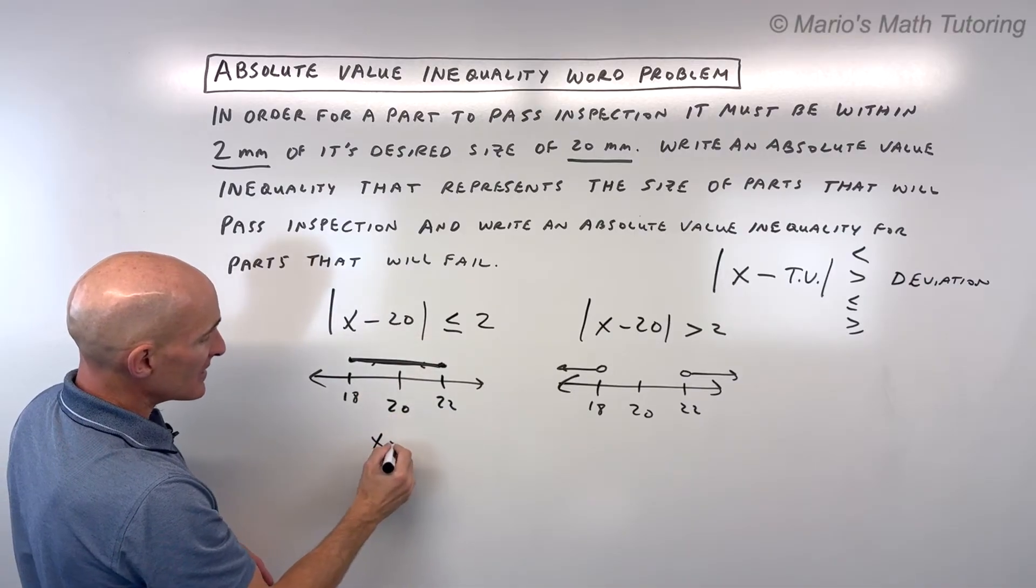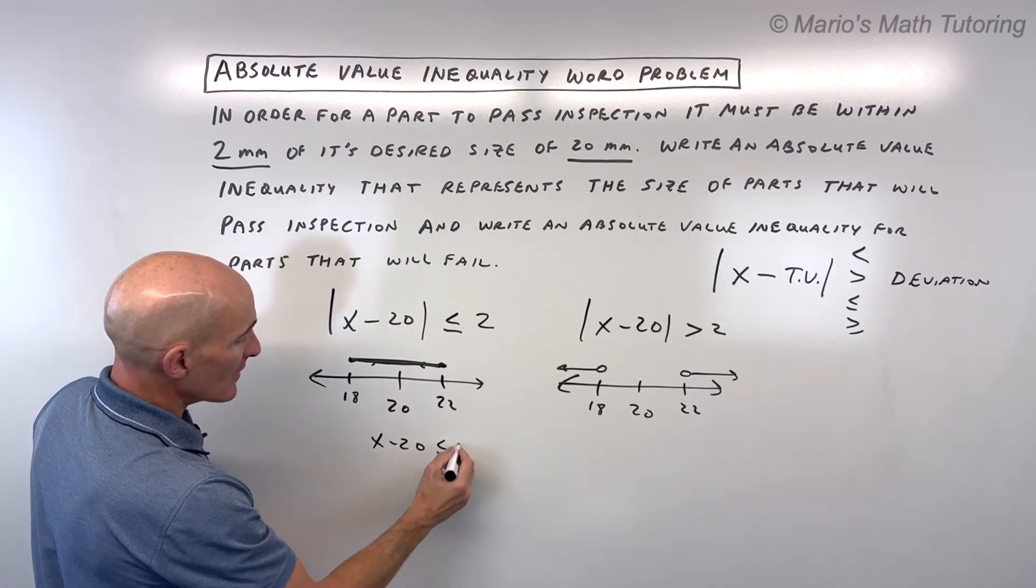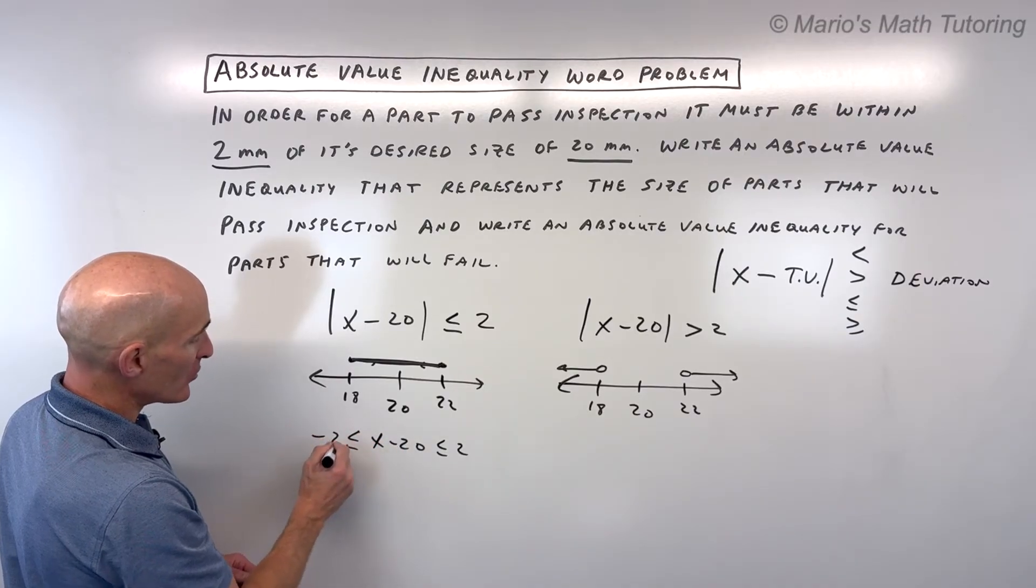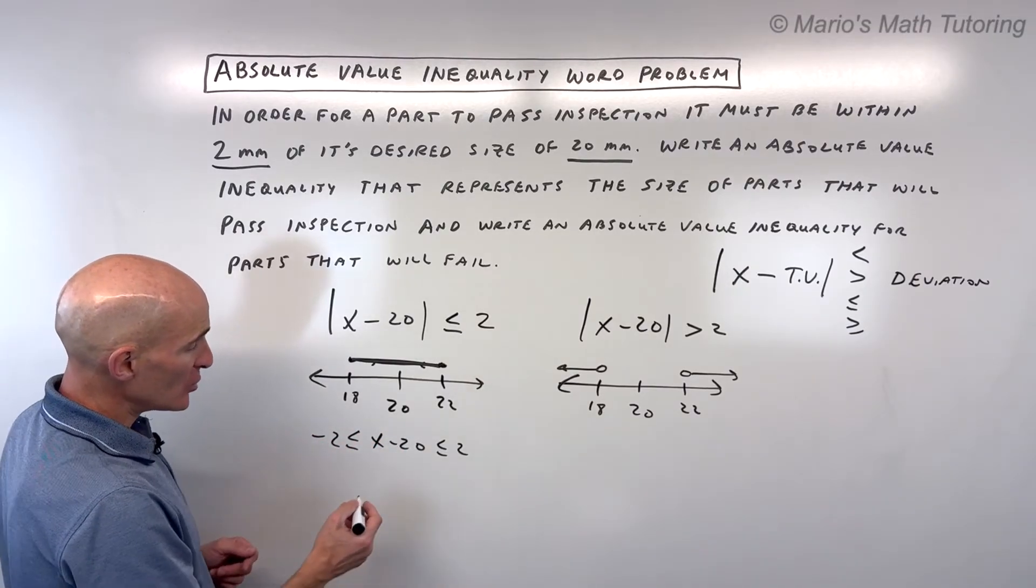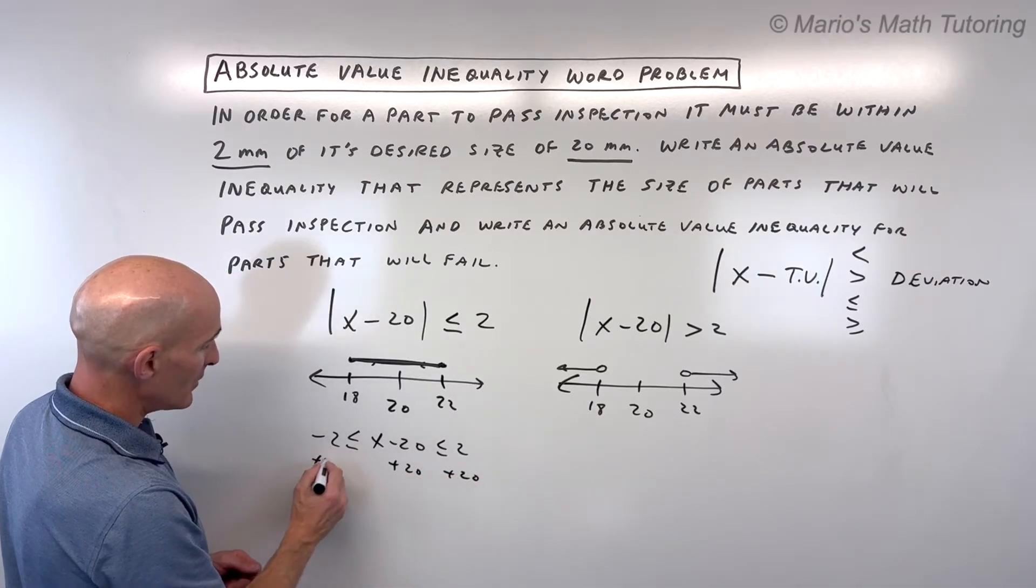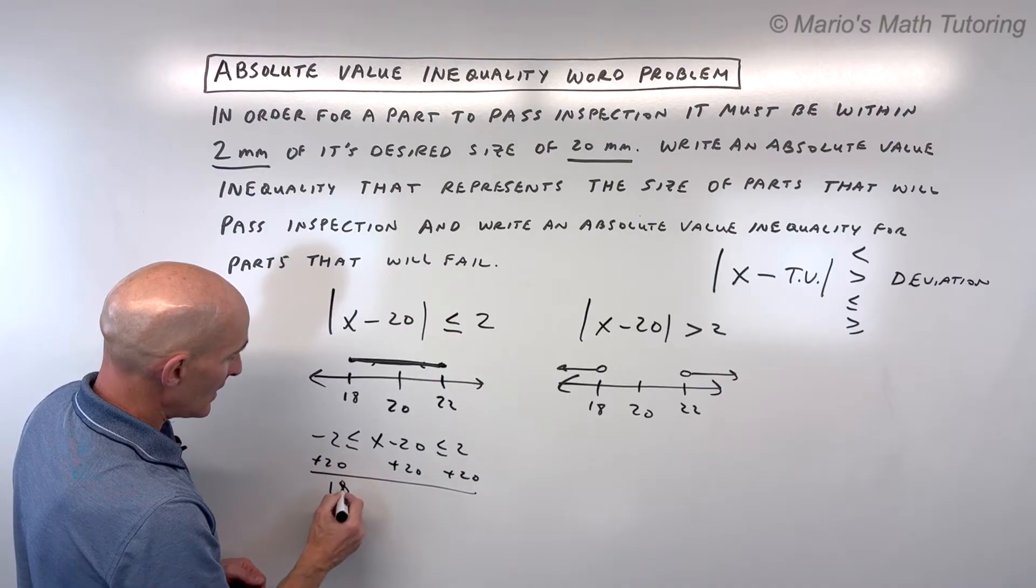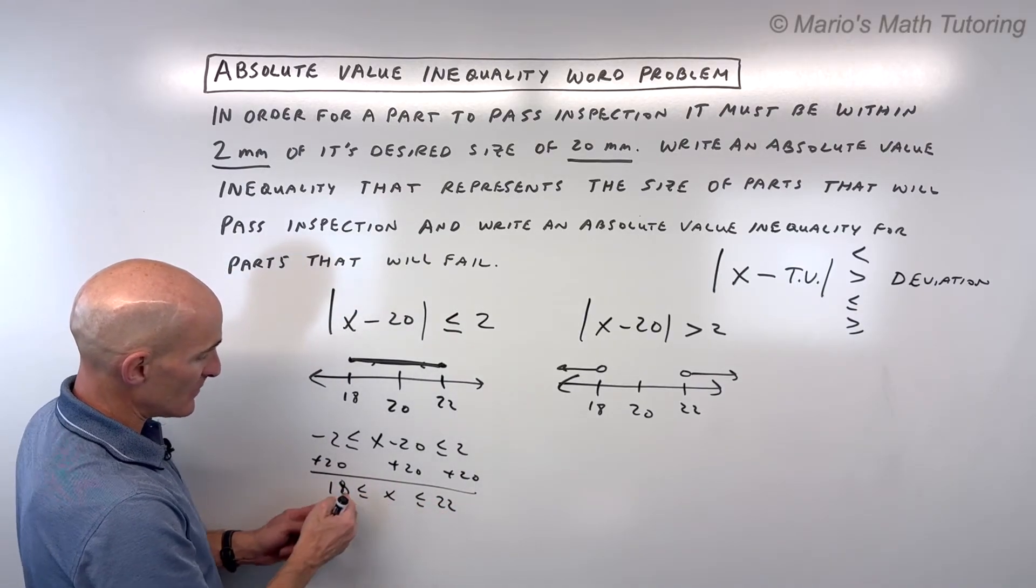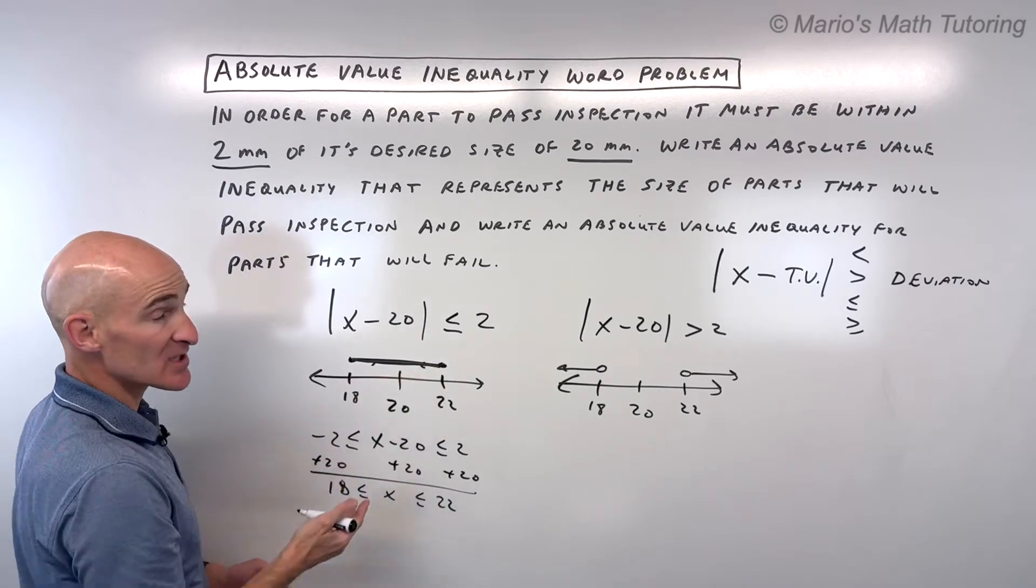When it's an 'and', you can take this quantity in absolute value. It's going to be less than or equal to 2, and this quantity is going to be greater than or equal to negative 2. Then solve by adding 20 to the left, middle, and right, and you get 18 ≤ x ≤ 22. So x is between 18 and 22, just like we see on the graph.